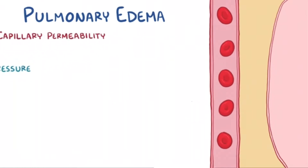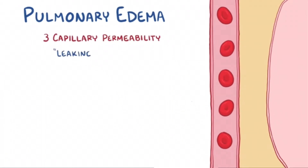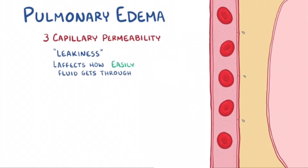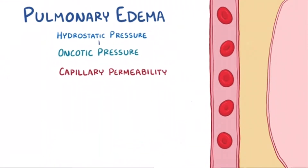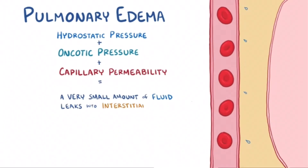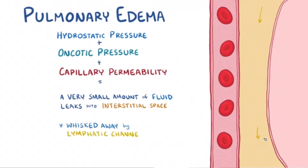Finally there's capillary permeability, or leakiness, which affects how easily a fluid is actually able to get through. When taking these three factors together, the net result is that a very small amount of fluid leaks into the interstitial space, and that fluid is normally whisked away by the lymphatic channels in the lungs, which keeps the lungs free of excess fluid.